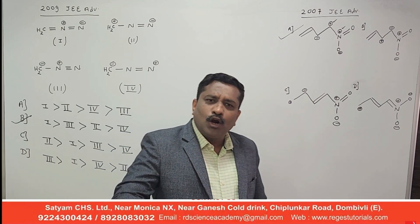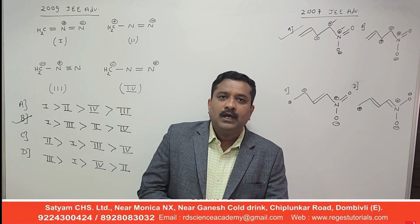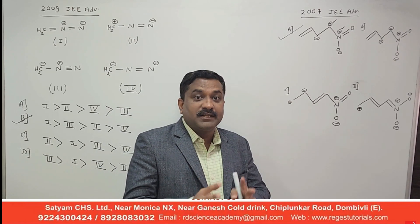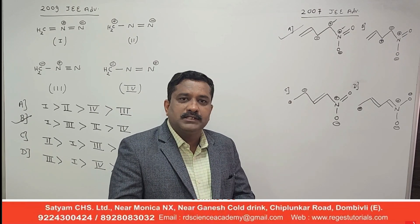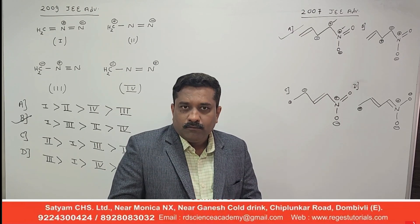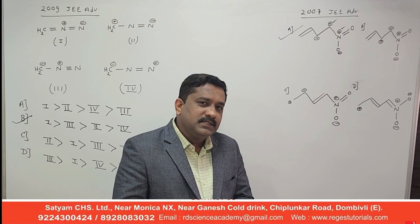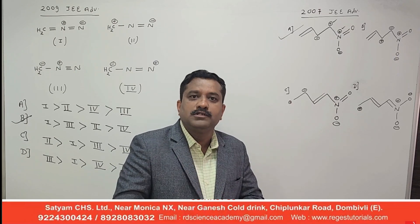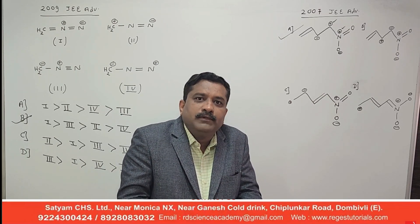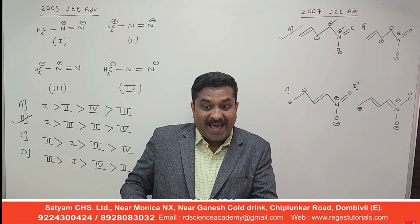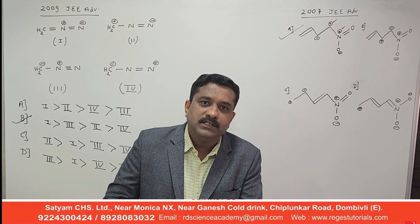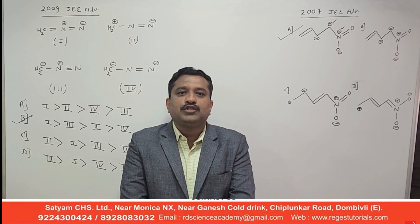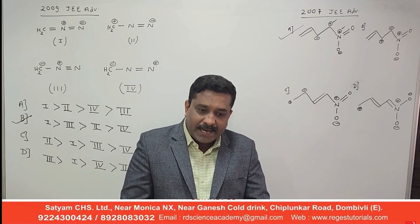There are many questions in JEE Advanced based on this concept. One additional point: always check the valence of atoms. In one JEE Advanced question, nitrogen was shown forming five bonds — but nitrogen's valence is only three, and at most four if it donates a lone pair to form a coordinate bond. Nitrogen cannot form more than four bonds. If an atom's valence is not satisfied correctly, that structure is inherently invalid and unstable.